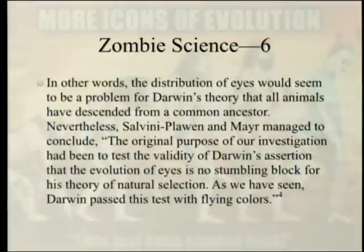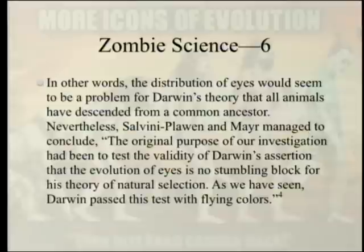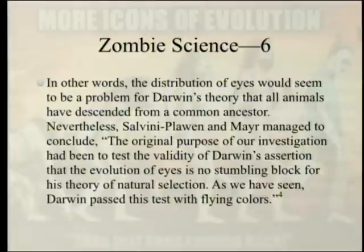The distribution of eyes would seem to be a problem for Darwin's theory that all animals descend from a common ancestor. Nevertheless, Salvini-Plawen and Mayr concluded: 'The original purpose of our investigation was to test the validity of Darwin's assertion that the evolution of the eyes is no stumbling block for his theory of natural selection. As we have seen, Darwin passed this test with flying colors.' How one reaches that conclusion is beyond explanation — but whatever.